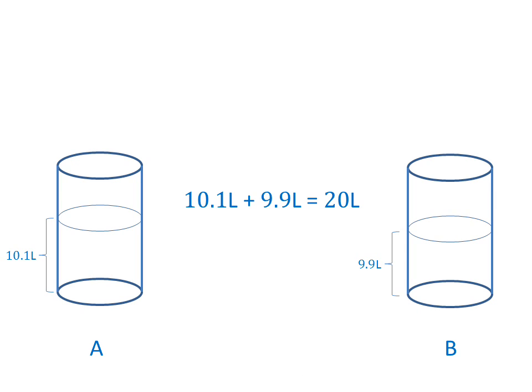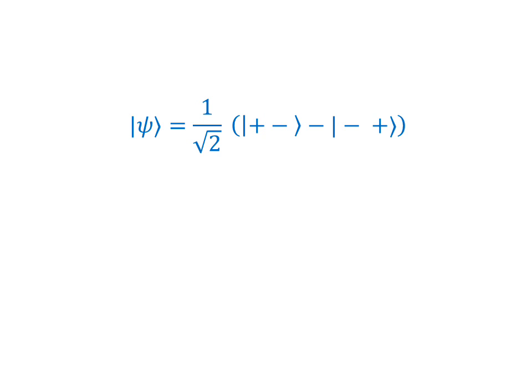Both in the classical and in the quantum mechanical case the two parts of the system, the two vessels, respectively the two particles, are not independent from the onset, as a result of the way the problem is construed. The fact that the two vessels, far removed from each other, are not independent and this is the prerequisite for the violation of Bell's inequalities is not something immediately evident. The dependence between the two vessels is ensured by the initial condition that the total volume of water in the system is fixed, 20 liters.